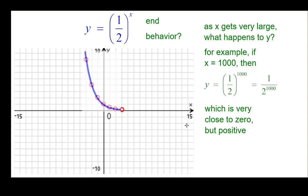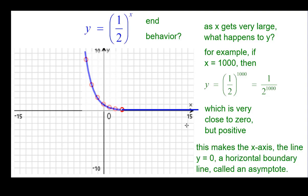And so how do we show that on the graph? It kind of flattens out as x gets larger and larger, right there. And that makes the x axis, which is the line y equals zero, a horizontal boundary line. And we call those boundary lines asymptotes.